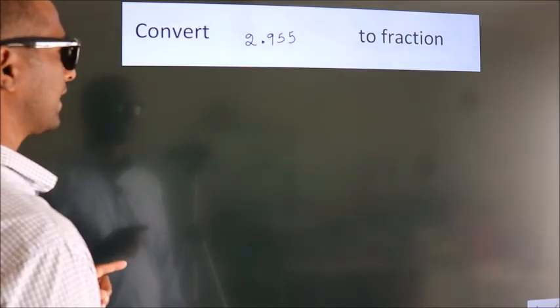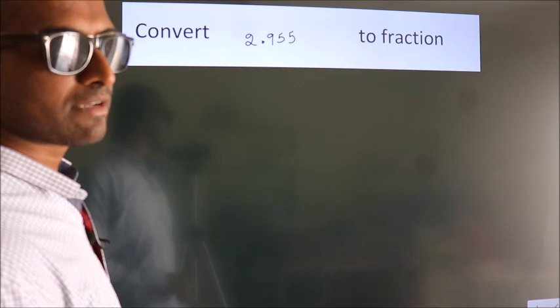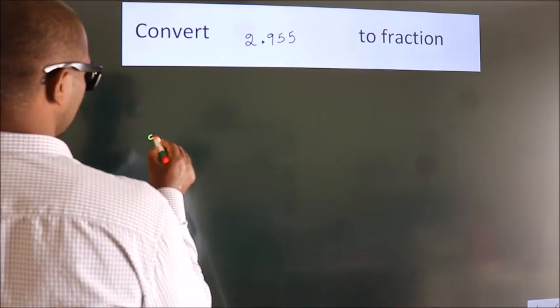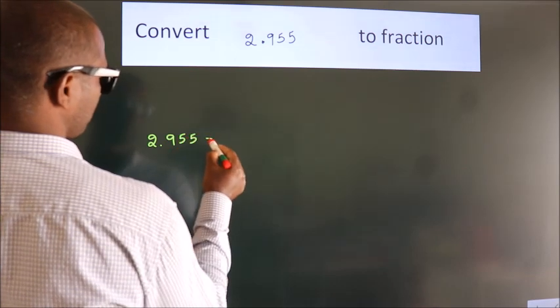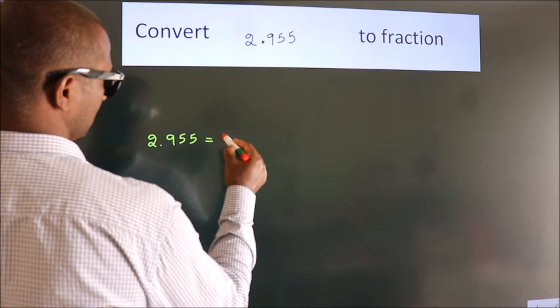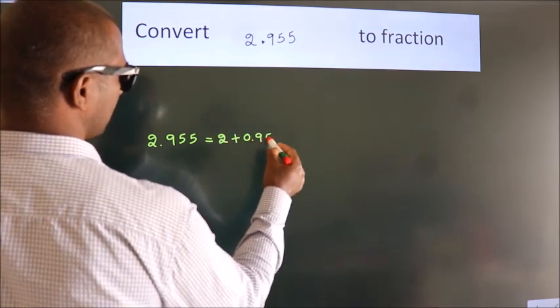Convert 2.955 to a fraction. How do we convert this? Given is 2.955. First we should break this into 2 plus 0.955.